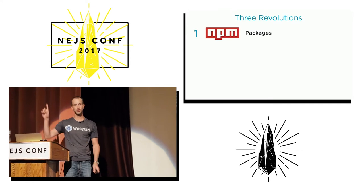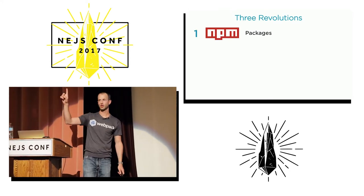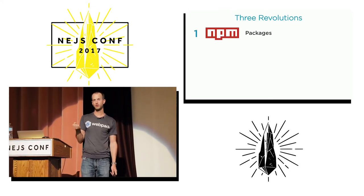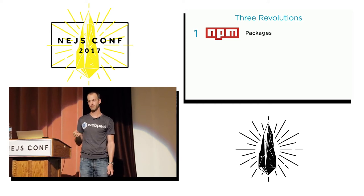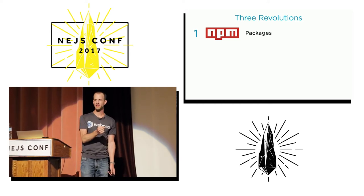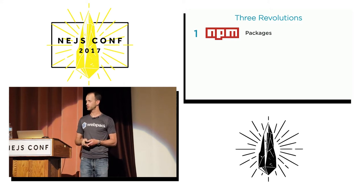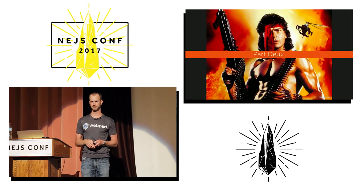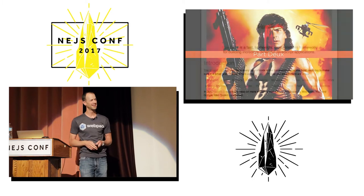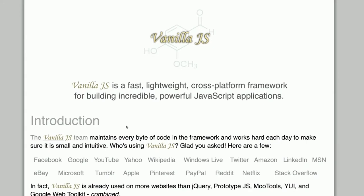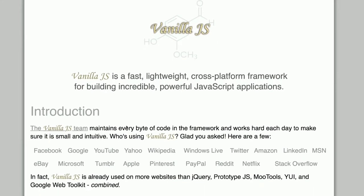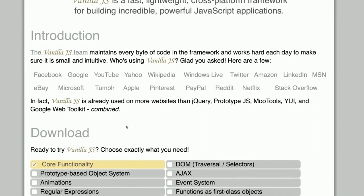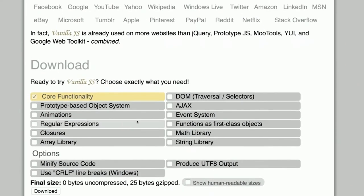That was the first revolution — the package revolution. This is the very foundation of the reusable JavaScript revolution. You need to have accepted that before moving on to phase two. Phase two is starter kits — or as I like to call it, part deux. If you were coding back in the day with jQuery versus MooTools versus PrototypeJS, there was a funny site called VanillaJS where you could build your own custom download.